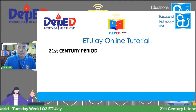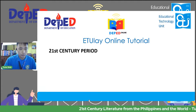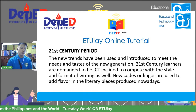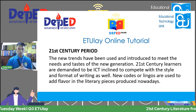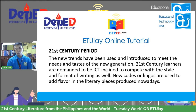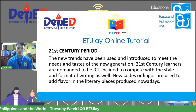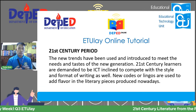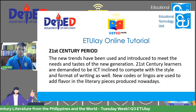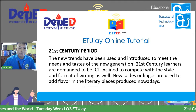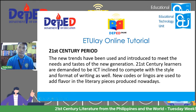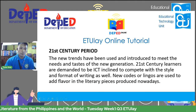Now comes our 21st century period. Most senior high school learners are very aware of this period or the 21st century literature. New trends have been used and introduced to meet the needs and tastes of the new generation. 21st century learners are demanded to do ICT. New codes or lingos are used to add flavor in the literature taught nowadays. The hardest thing to teach our 21st century learners of literature nowadays would be appreciation — they are saturated with technology and the digital age.